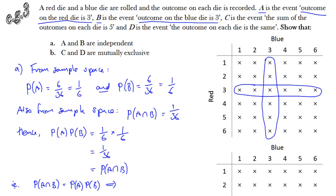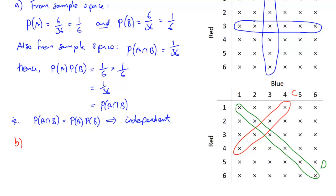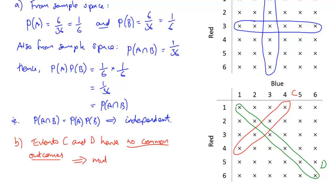Any time you can prove that P(A) × P(B) = P(A ∩ B), you can say the two events are independent. For Part B, we consider two events to show are mutually exclusive. Event C is that the outcomes add up to 5 — that's 4+1 and 3+2, giving four outcomes. Event D is that the outcomes on the two dice are the same — six outcomes. C and D have no common outcomes: there's nothing in their overlapping region. Since there's no overlap, we can say they are mutually exclusive, and the intersection of C and D equals zero.